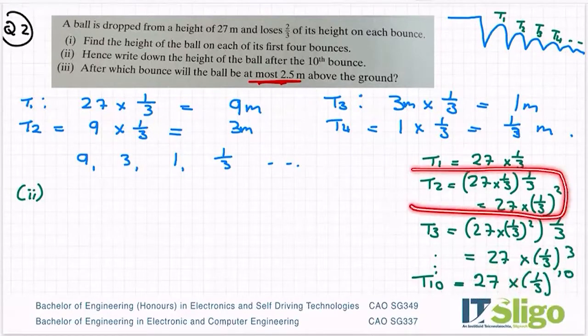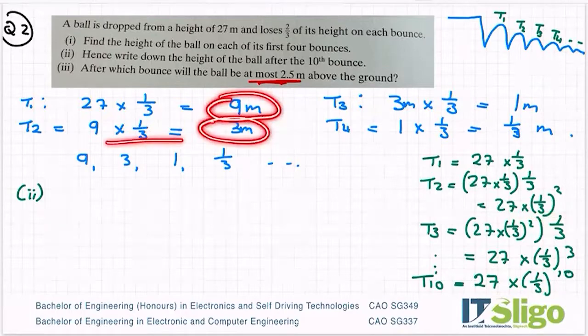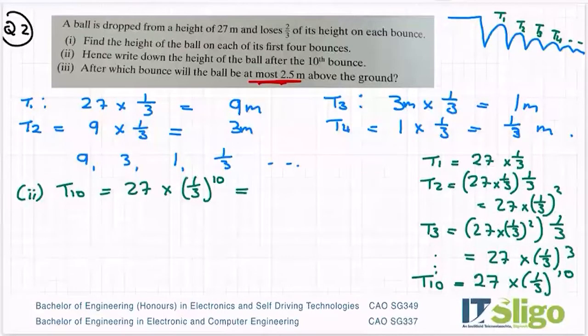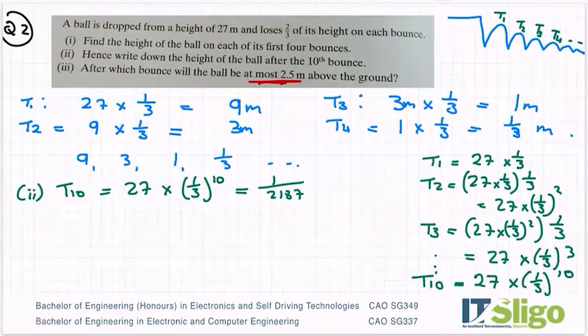Just like when I got, for example, T2, I took the 27 and I reduced it down by a third two times. Once to get nine and the second time to get three. So T10 therefore is equal to 27 multiplied by a third to the power of 10. Let me put that in my calculator. A third to the power of 10 and I've got one over 2187. Yeah, and it's a small decimal number. So that's my T10.